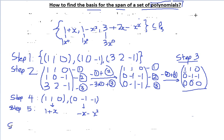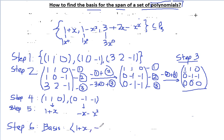Step 6: we write the basis as the collection of these polynomials. Therefore the basis is {1 plus x, minus x minus x squared}. This is our answer, and we have come to the end of this lesson. If you have any questions, please feel free to drop a comment and I will reply. Thanks so much for watching and have a nice day.